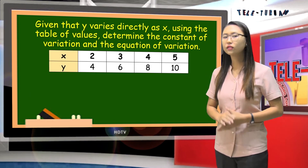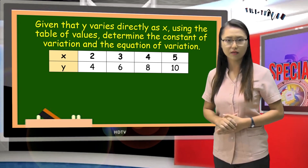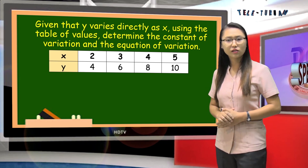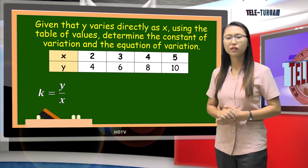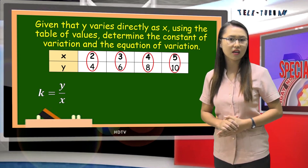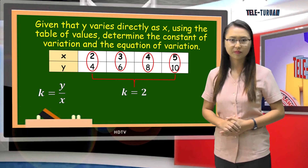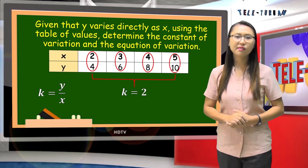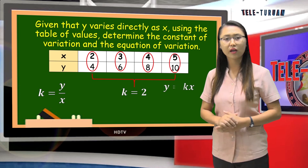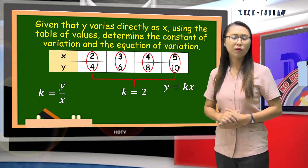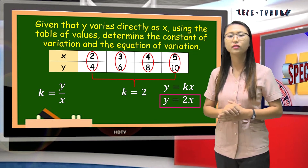Next, how to determine the constant of variation and the equation of variation given the table of values. To determine the constant of variation, we will use k is equal to y over x. In this table, when we divide y by the value of x, the answer is 2. The constant of variation in this table is 2. To determine the equation of variation, all we have to do is substitute the value of k in the equation y is equal to kx. So we have y is equal to 2x. The equation of variation is y is equal to 2x.